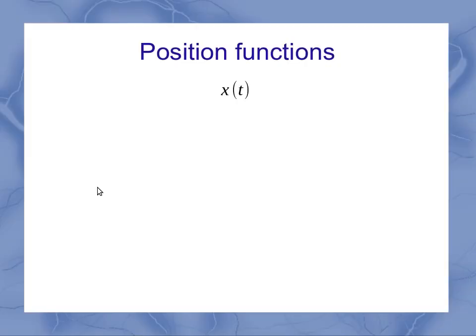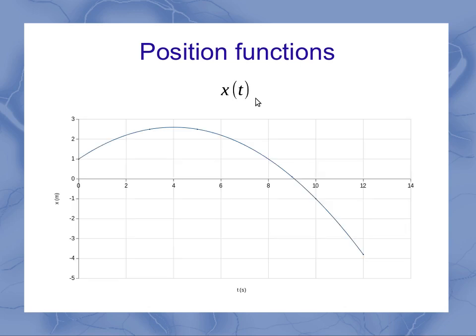Now, both of those examples used a graph where we had data points. But sometimes we're actually given a function for the position, an actual equation. If we're given an actual equation for the position as a function of time, then we can create a continuous graph of that particular function.